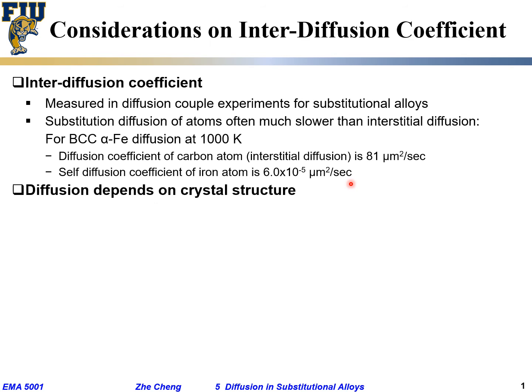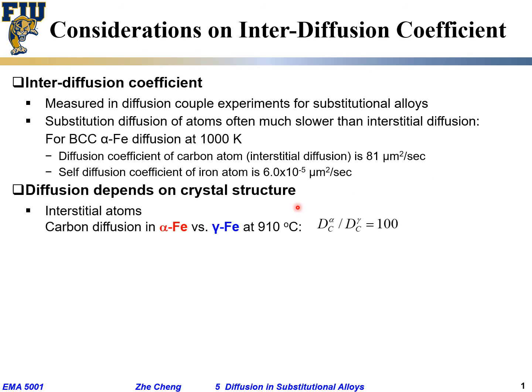Diffusion also depends on crystal structure. Looking at some examples: we are looking at interstitial diffusion of carbon in different types of iron. One is alpha iron, the so-called BCC body-centered cubic, where the iron atoms are arranged in BCC fashion. The other one is so-called gamma iron, where the iron atoms are arranged in face-centered cubic fashion.